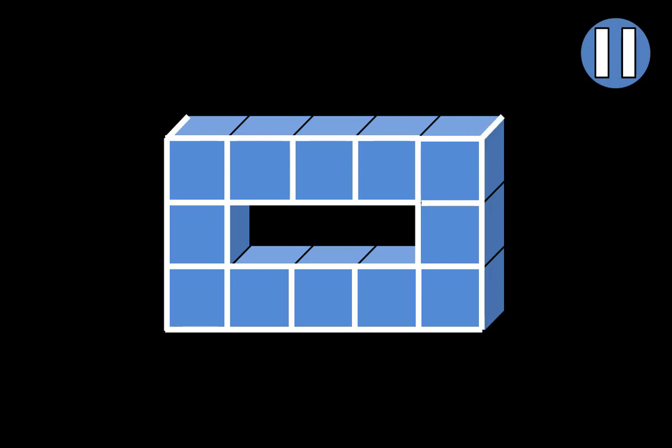Now we'll draw the diagonal lines. Draw one from this corner, draw one from this corner, and draw a matching diagonal line from this corner. Now we're going to connect these two ends — draw a line all the way across. And we'll connect these two ends — draw a line all the way down.